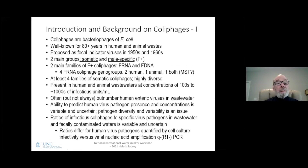What we know is that coliphages are bacteriophages of E. coli. They've been well known for 80 plus years as present in human and animal wastes, and they've been proposed as fecal indicator viruses since the 1950s and 60s. There are two main groups of coliphages: somatic and male-specific, or F+. The two main families of F-plus coliphages are F-plus RNA and DNA groups.